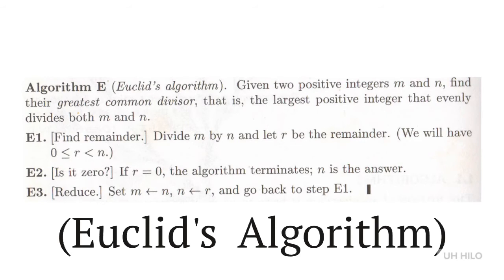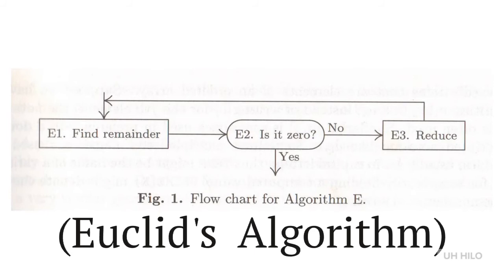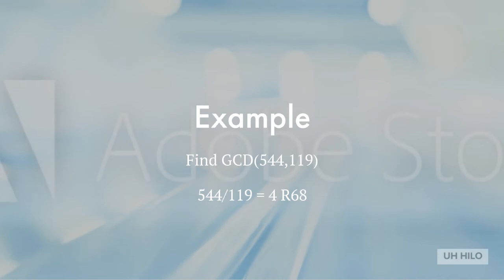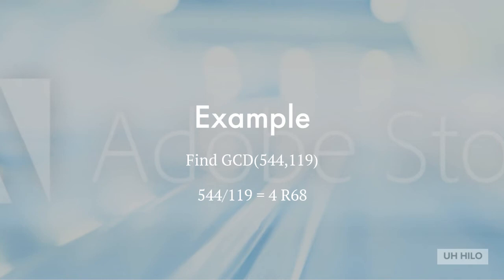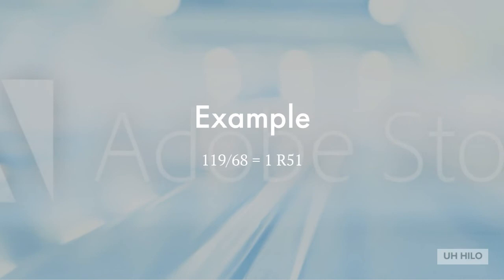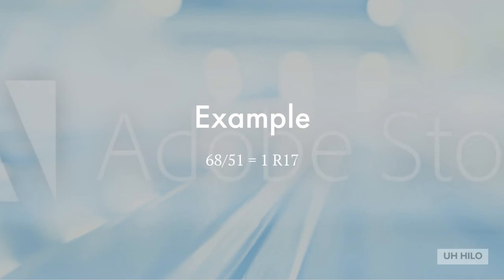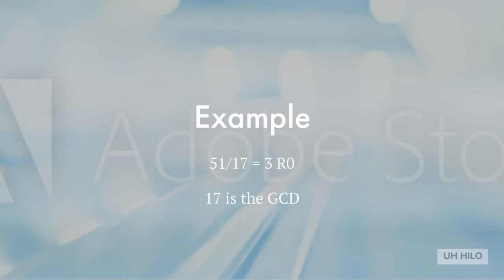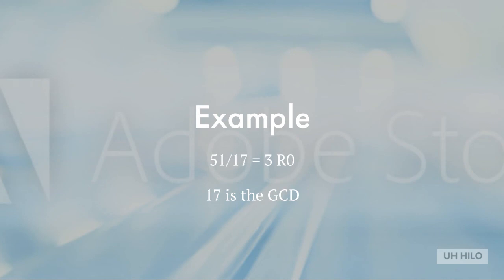It's also possible to visualize this algorithm with a flowchart. Let's look at an example: finding the greatest common divisor of 544 and 119. We start by dividing 544 by 119, getting a quotient of 4 with a remainder of 68. We set m equal to 119 and n equal to 68. Next, 119 divided by 68 gives a quotient of 1 and a remainder of 51, so m becomes 68 and n becomes 51. Then 68 divided by 51 gives a quotient of 1 and a remainder of 17, so m becomes 51 and n becomes 17. Finally, 51 divided by 17 gives 3 with a remainder of 0, so the algorithm terminates. The greatest common divisor of 544 and 119 is therefore 17.